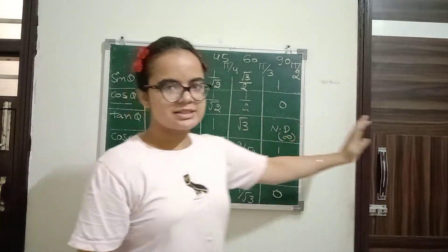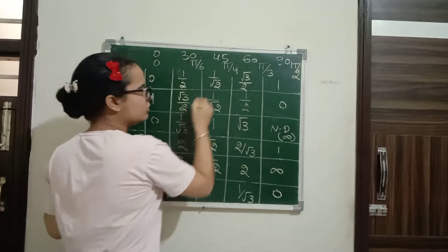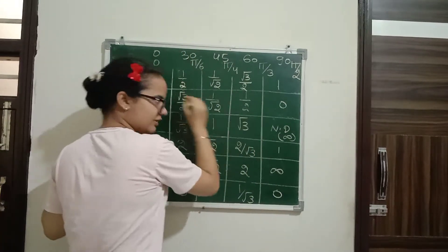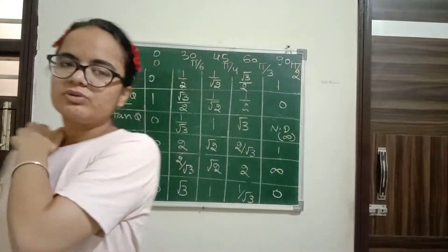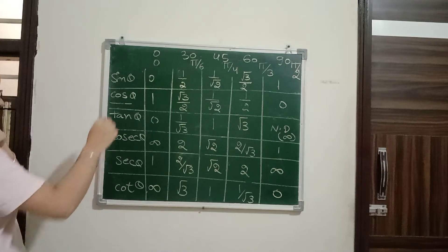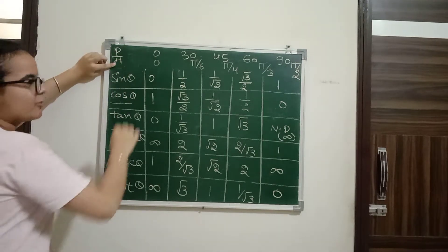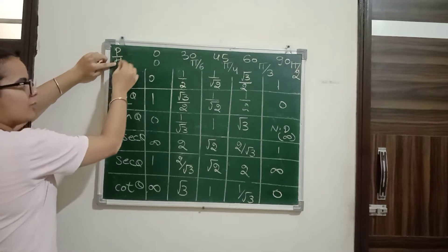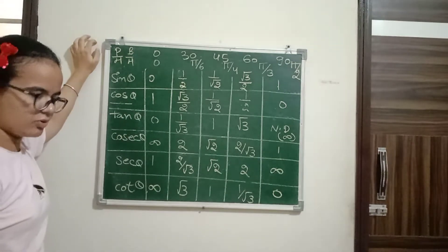When we write cos theta, one by two, root three by two, one by root two, one by two, then zero. Tan is sine divided by cos. We know sine theta is p upon h, that is perpendicular upon hypotenuse. Cos theta is b upon h, that is base upon hypotenuse.